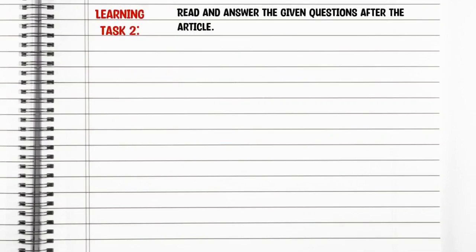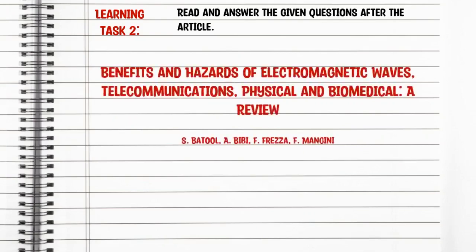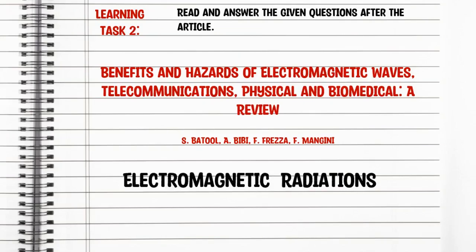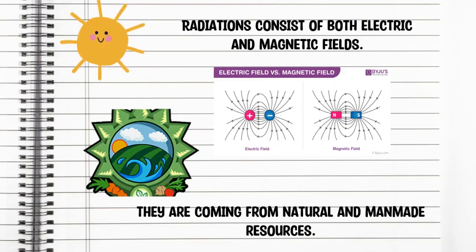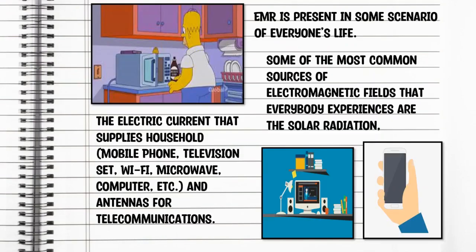For your learning task 2, read and answer the given questions after the article: Benefits and Hazards of Electromagnetic Waves — Telecommunications, Physical and Biomedical, a review by S. Batuol, ABB, F. RESA, and F. MU. Electromagnetic radiations consist of both electric and magnetic fields. They are coming from natural and man-made resources. EMR is present in some scenario of everyone's life. Some of the most common sources include solar radiation, electric current that supplies households, mobile phones, television sets, Wi-Fi, microwave computers, and antennas for communication.